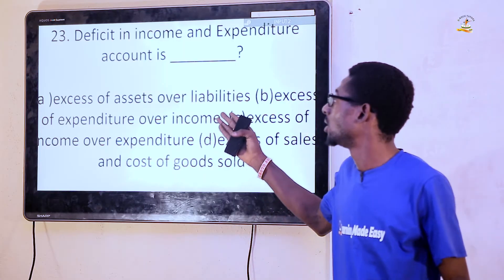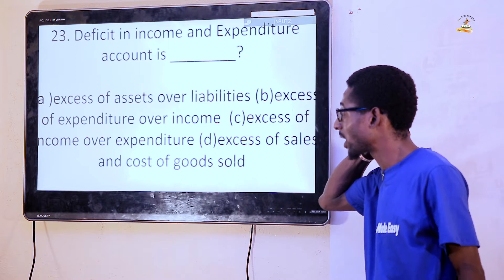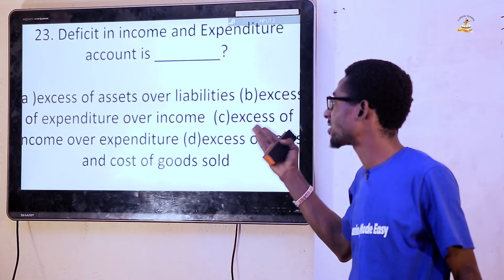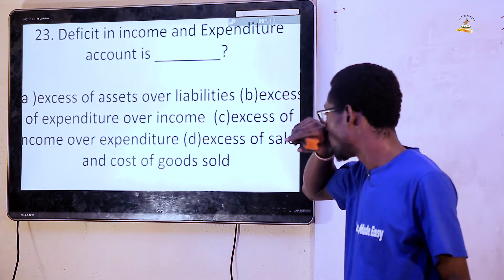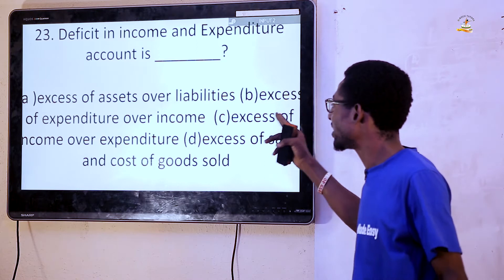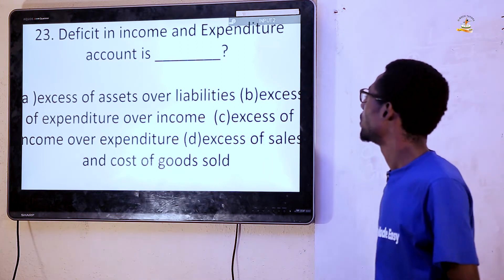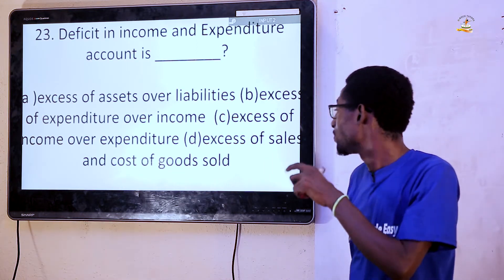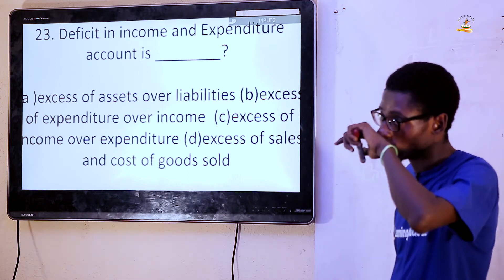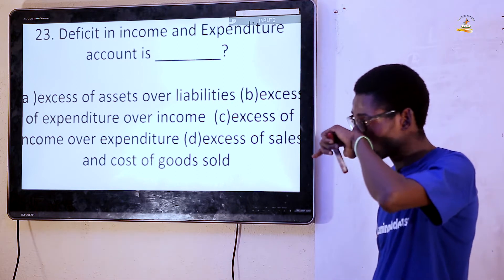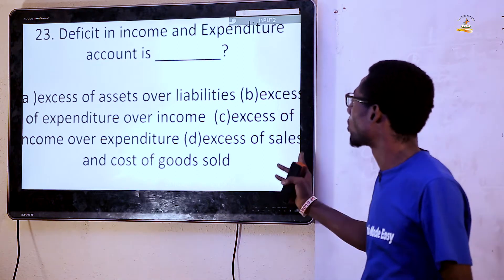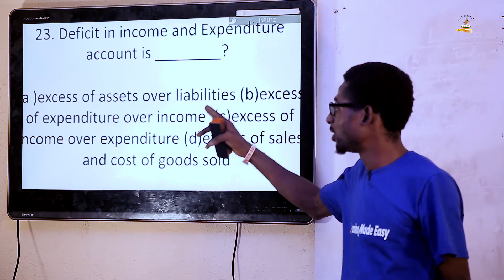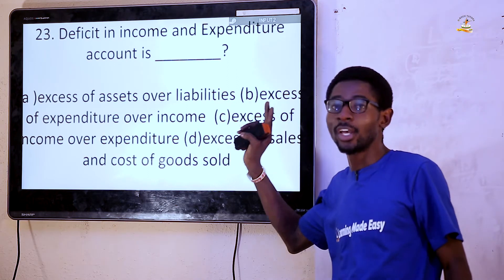Question 3: Deficit in income and expenditure accounts is — A: Excess of assets over liabilities. B: Excess of expenditure over income. C: Excess of income over expenditure. D: Excess of sales and cost of goods. The answer is option B — excess of expenditure over income.